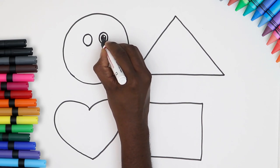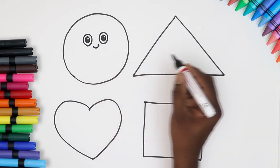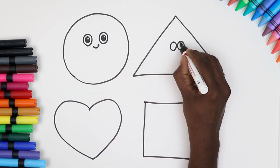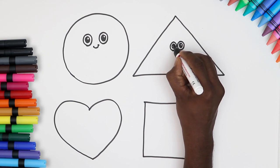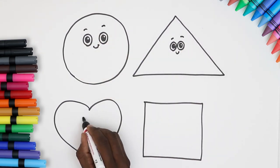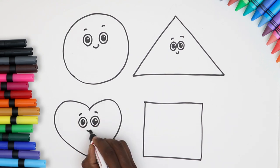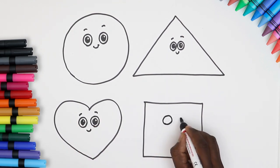Draw eyes. Color the pupils in. And a cute little smile. A face for our triangle. And don't forget the eyebrows. Next, a face for the heart. And the square too. Don't they look so cute?